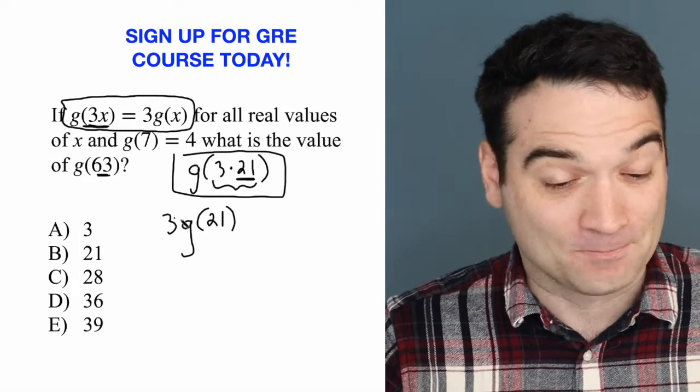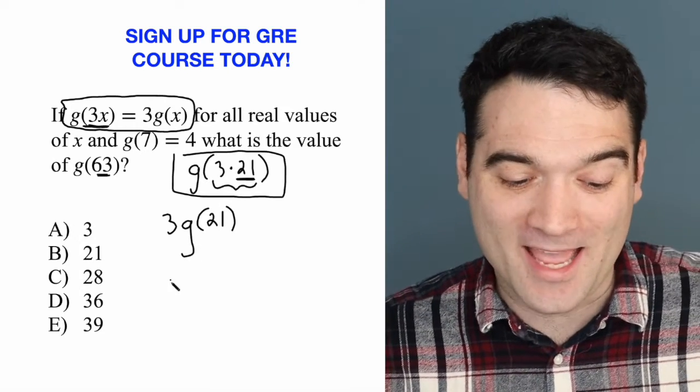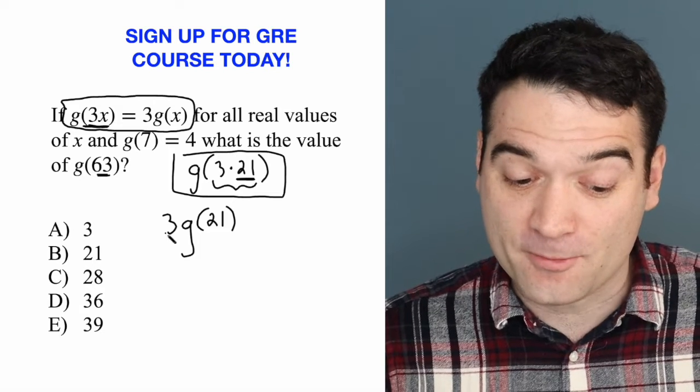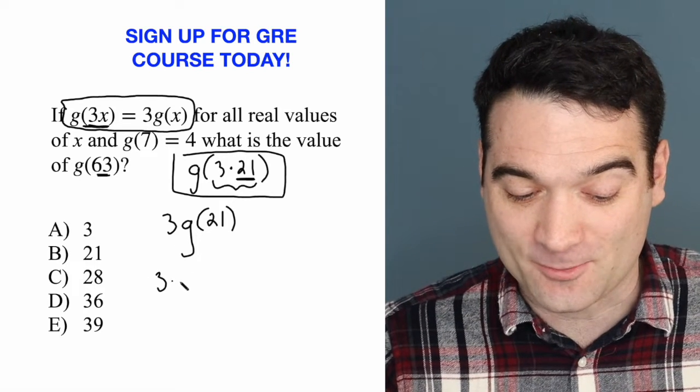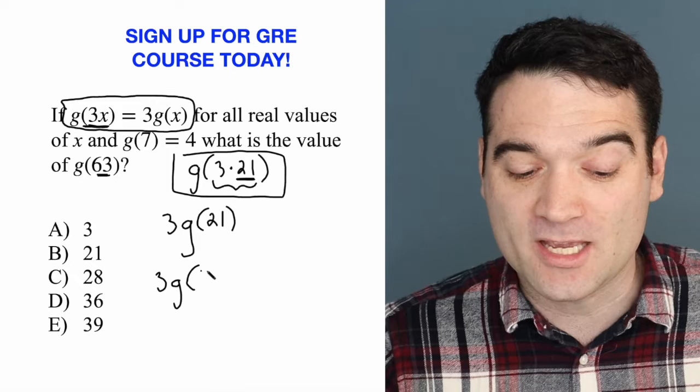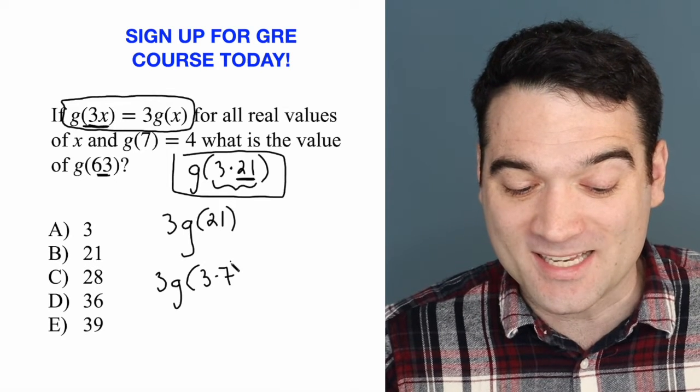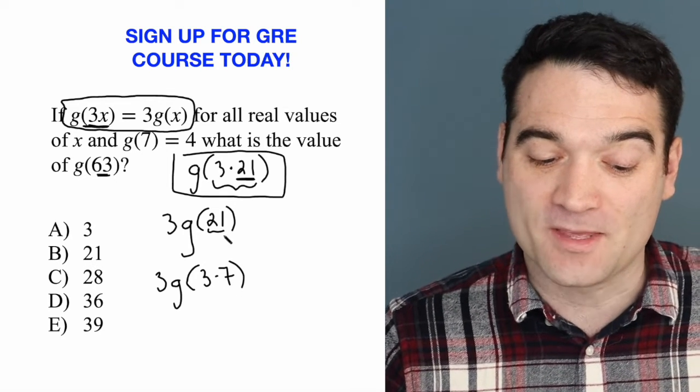Everyone with me? All right, now we can just do it again. Check this out. 3 times g of 21 is the same thing as 3 times g of 3 times 7. Again, I just broke this up.